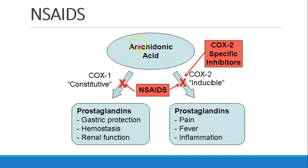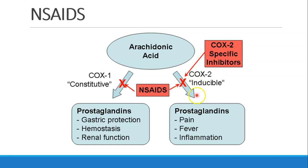Here's a diagram showing arachidonic acid being converted into prostaglandins — some involved in gastric protection, hemostasis through platelets, and renal function, while others cause pain, fever, and inflammation. NSAIDs block both of these pathways. However, there are some COX-2-specific NSAIDs that only block the COX-2 enzyme, and we may find that to be preferable.